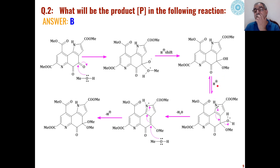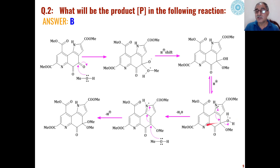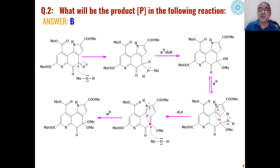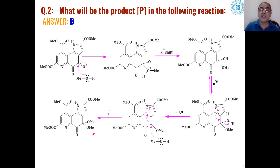In the presence of PTSA — para-toluene sulfonic acid — H⁺ ions react with the hydroxyl group, forming a positively charged water molecule that is easily removed with delocalization of charge. Water is removed to give another intermediate. Then a second methanol molecule generated from trimethoxy orthoformate attacks the carbon-carbon double bond to neutralize the positive charge on nitrogen, giving a product where the methoxy group is attached to the carbonyl. This is how product B is formed.